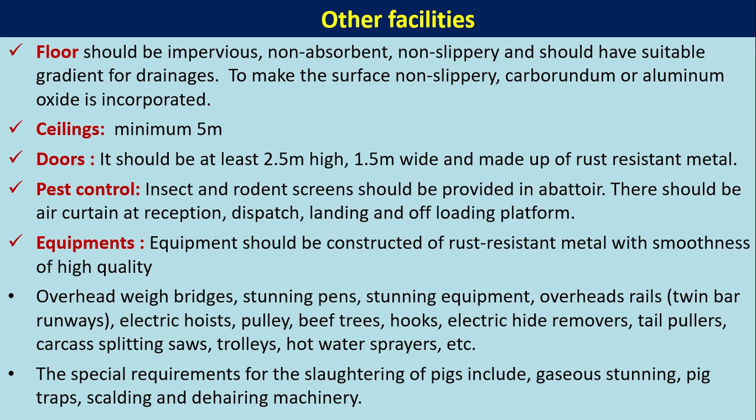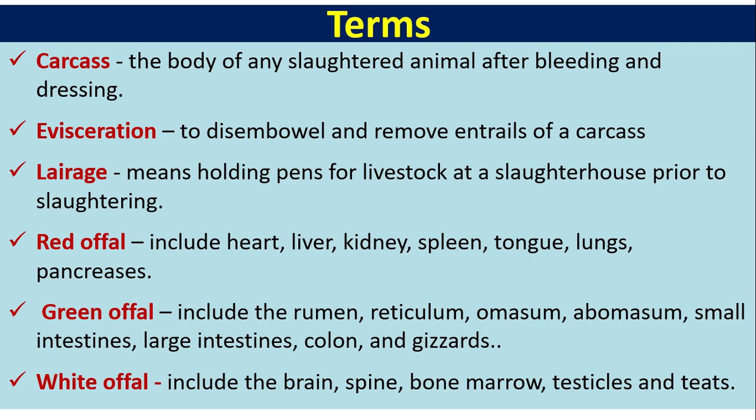Equipment should be constructed of rust-resistant metals. Special requirements for slaughtering of pigs include gaseous stunning, pig traps, scalding, and dehairing machinery. A carcass is defined as the body of any slaughtered animal after bleeding and dressing.